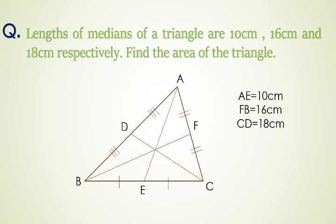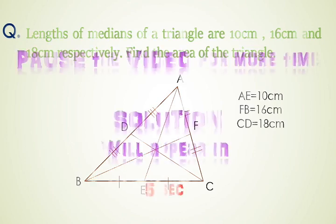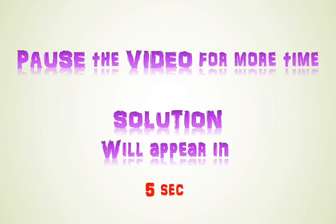We have a triangle whose medians are given: AE is equal to 10 cm, FB is equal to 16 cm and CD is equal to 18 cm, and with this data we have to calculate its area. If you have not tried this question yet, you can pause the video for more time.